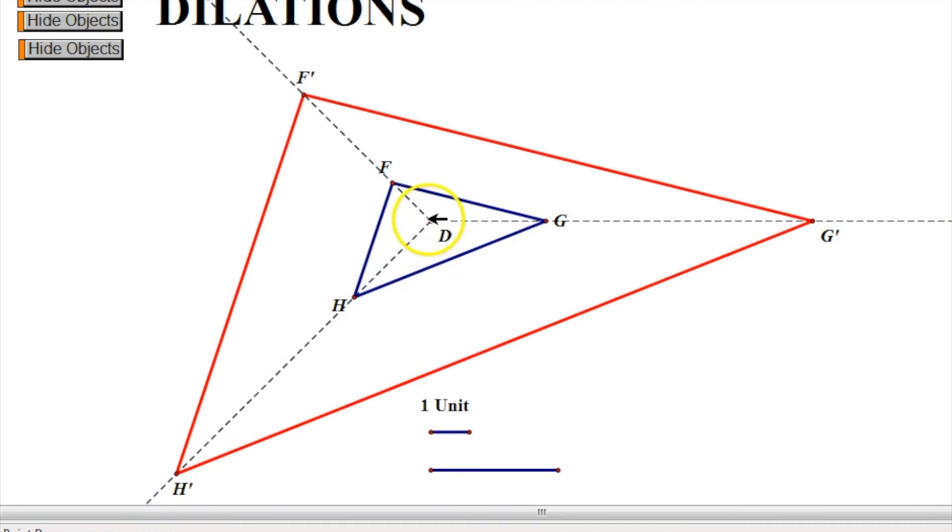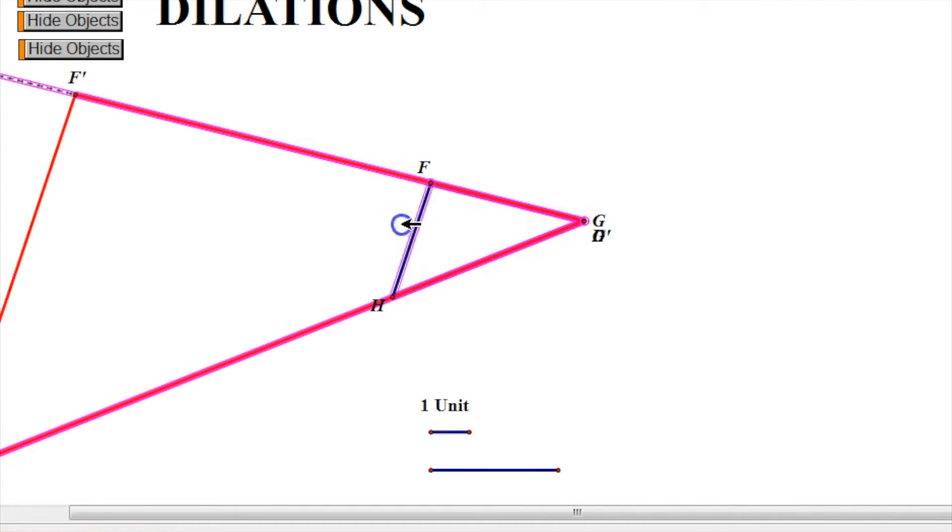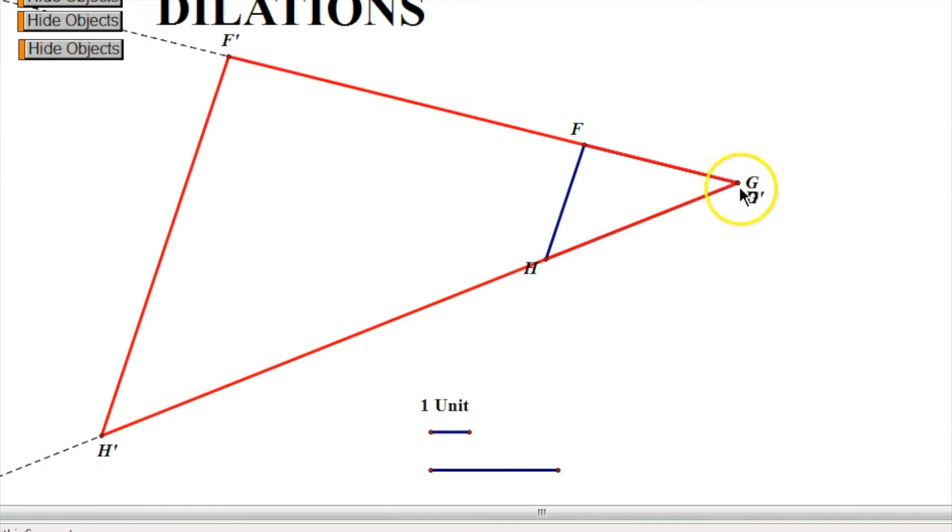And then if you move this onto, let's say we'll move it onto G, it creates, again, this kind of environment where G does not move. And then what moves is simply the parallel line that gets enlarged by a certain scale factor.